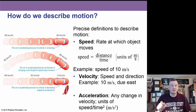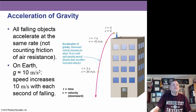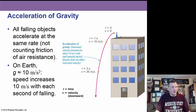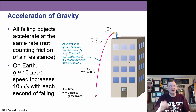Velocity includes a direction. So a velocity would be 10 meters per second due east. All falling objects accelerate at the same rate — this is the acceleration due to gravity. On Earth, we round this to 9.8 meters per second squared, meaning speed increases about 10 meters per second every second that object is falling.